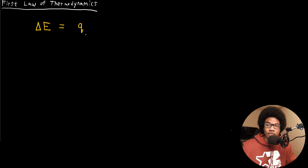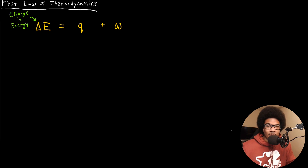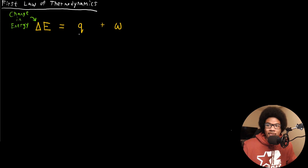The first component we'll use a lowercase q to define — this is the heat. The second part of that sum is the work, which we'll use a lowercase w to define. So delta E is our change in energy. There's been some transfer of energy: either our system has done work on some other object, or there's been some heat transfer because of a temperature difference. Those are the two components of how energy can be transferred. So q is heat and w is work.